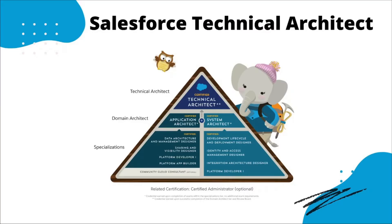For the Technical Architect path, you need to complete certifications from the bottom up. First, complete Application Architect, which requires Platform App Builder, PD1, Sharing and Visibility Designer, and Data Architecture and Management Designer. Then complete System Architect, which requires PD1, Integration Architecture Designer, Identity and Access Management Designer, and Development Lifecycle and Deployment Designer. Once you complete both Application Architect and System Architect, you can apply for the Technical Architect exam.